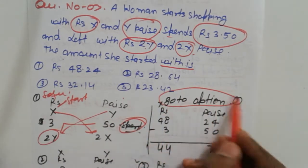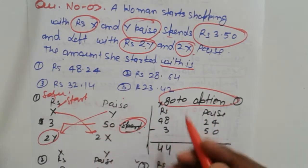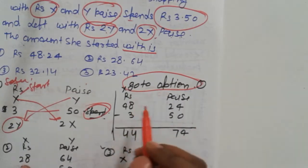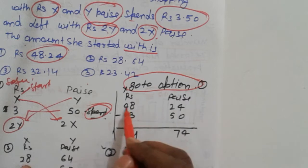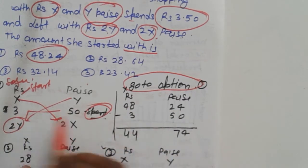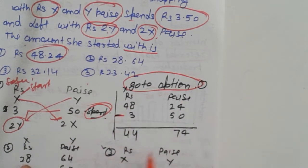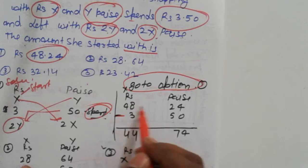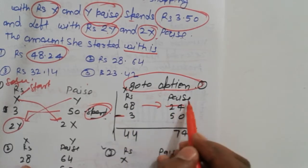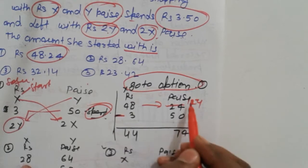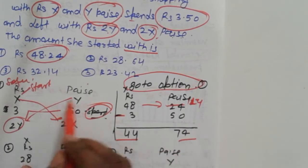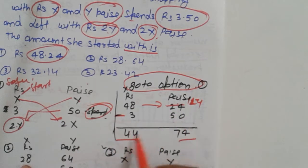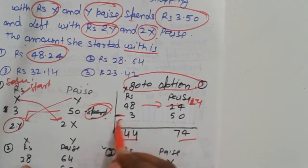Go to the options directly. First option: 48 rupees and 48 paise. Subtract the spent amount 3.50, which gives 24 rupees and 50 paise after borrowing 100. We get 124 minus 24 and 40, but this does not satisfy the condition 2y = 24.